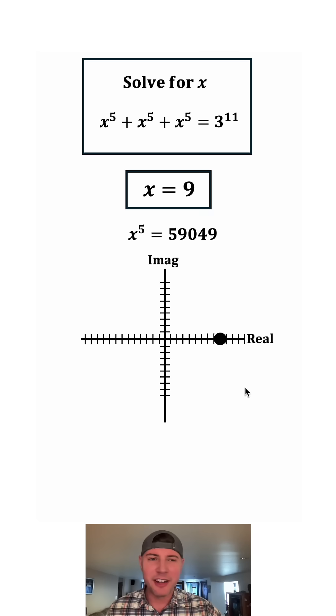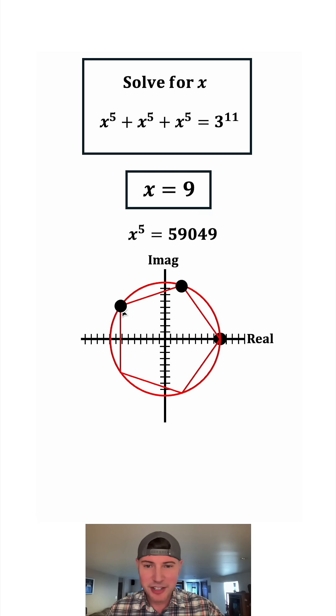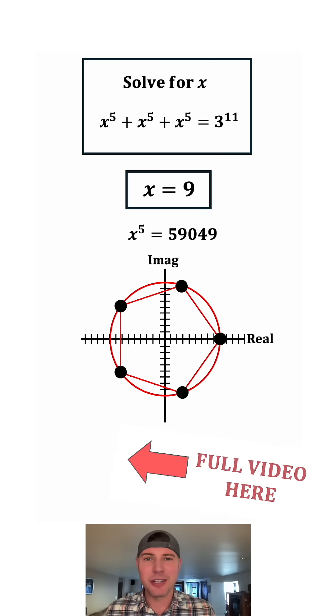A quick way to find the other solutions is draw a circle with radius nine. And then since there are five answers let's inscribe a regular pentagon. These intersections of the pentagon and the circle happen to be the solutions to the question.